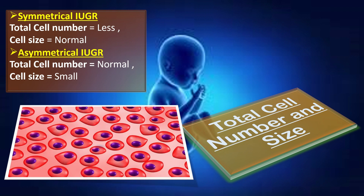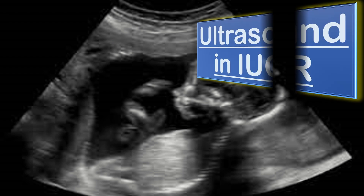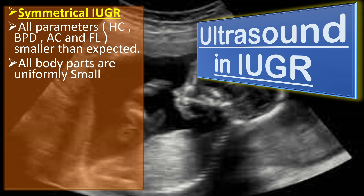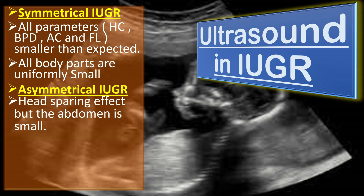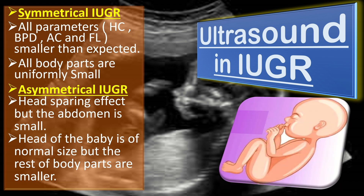On ultrasound, in symmetrical IUGR, all parameters — head circumference, biparietal diameter, abdominal circumference, and femur length — are smaller than expected; all body parts are uniformly small. In asymmetrical IUGR, there is a head-sparing effect but the abdomen is small; the head is of normal size while the rest of the body parts are smaller.